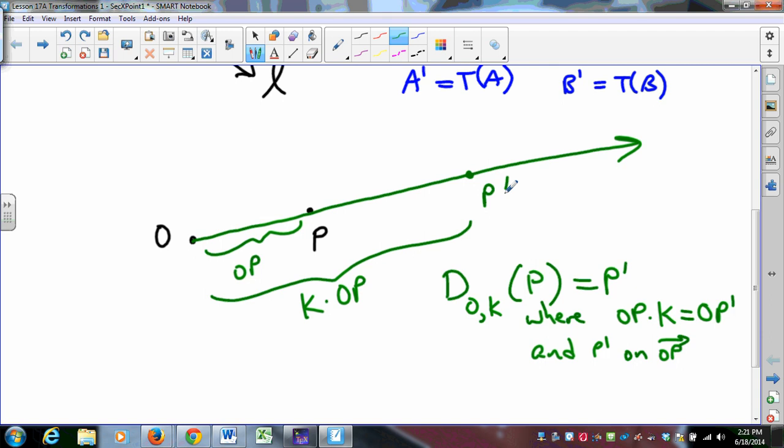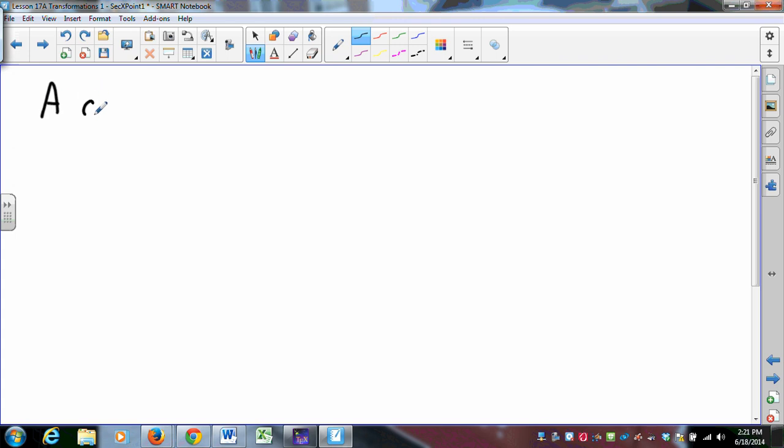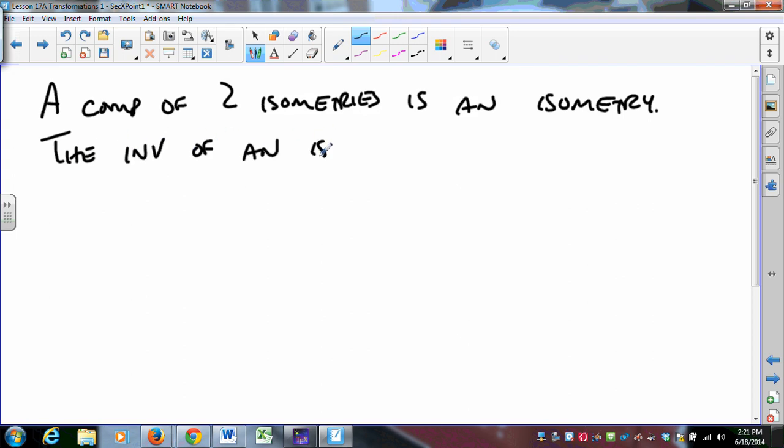But isometries are fun for the following reason. A composition of two isometries is an isometry. The inverse of an isometry is an isometry. These are very, very comforting facts for us. They are theorems that can be proved.